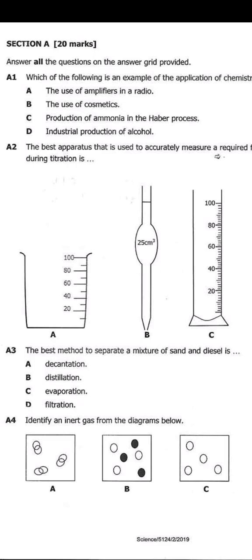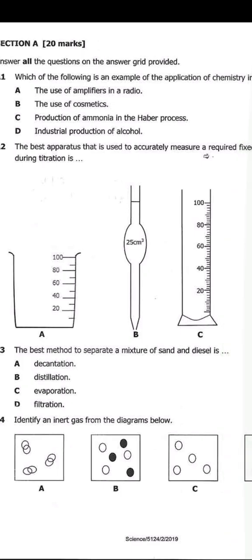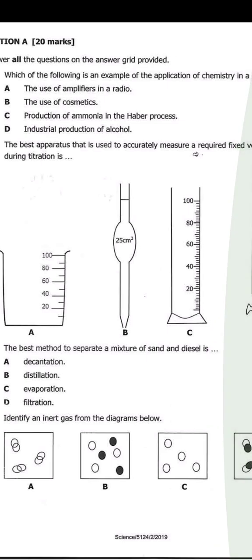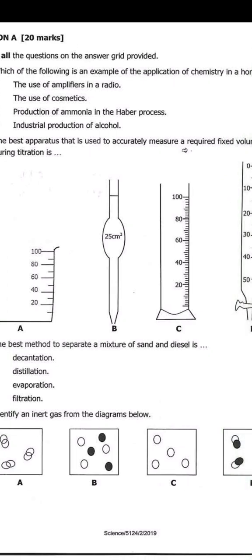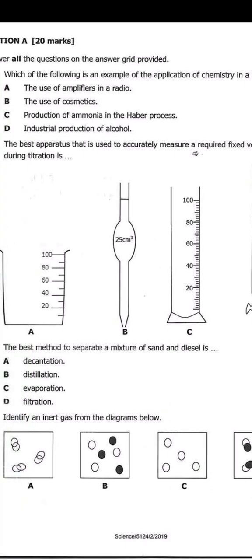Identify an inert gas from the diagrams below. So, an inert gas, of course, it exists as a diatomic molecule in nature. And, of course, it must be monogeneous. That means it must contain the same kind of compounds. So, B and D are automatically out because they contain two different atoms. So, that means the answer is A.